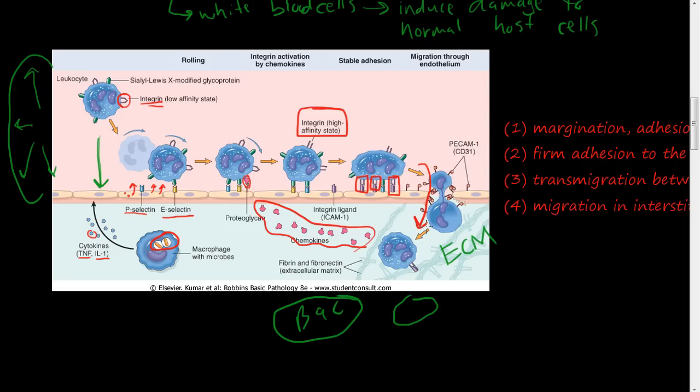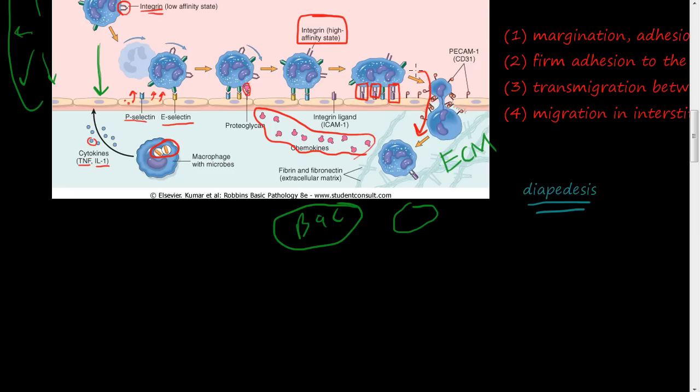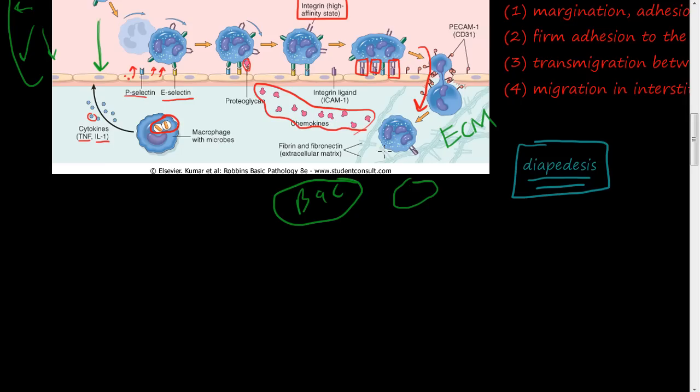Once completely stopped, the leukocyte expresses molecules and squeezes out into the extracellular matrix. This process is called diapedesis — the movement of a white blood cell out from a vessel, usually the venule, into the extracellular matrix. Once outside, neutrophils in most cases undergo chemotaxis.